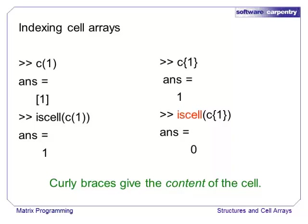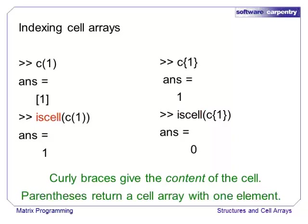This might seem confusing, and it is. The truth is, cell arrays were a late addition to MATLAB. The core language was designed with only arrays in mind, so both cell arrays and structures had to be given a few slightly strange syntax patterns in order to maintain full backwards compatibility. If you get an error when you are working with cell arrays or structures, be sure to check the output of the function iscell or isstruct. If the answer is 1, then the data type was a cell array with one element. If the answer is 0, then the data type is the type of whatever was stored in that location.